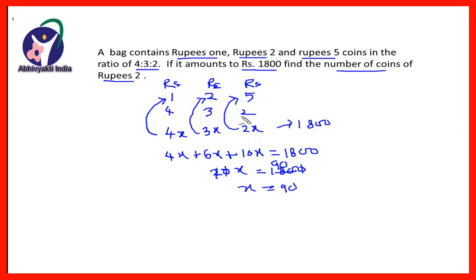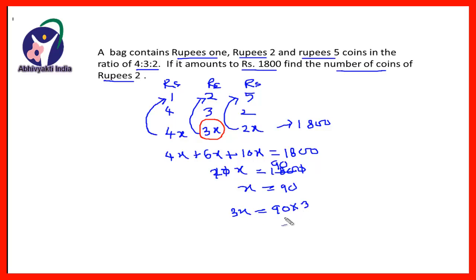Now we have to find the number of coins of rupees 2. The number of 2-rupee coins is 3x, therefore 3x = 3 × 90 = 270. So the total number of coins of rupees 2 is 270.